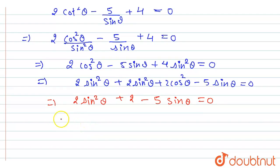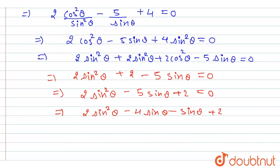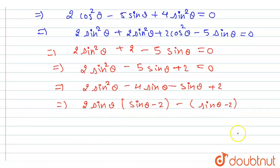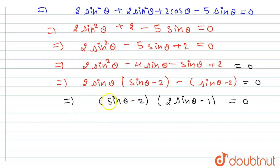The roots of 2sin²θ − 5sinθ + 2 = 0 are found by factoring: 2sin²θ − 4sinθ − sinθ + 2 = 0, which gives 2sinθ(sinθ − 2) − 1(sinθ − 2) = 0, so (sinθ − 2)(2sinθ − 1) = 0.